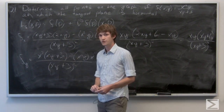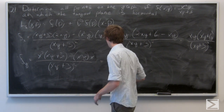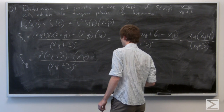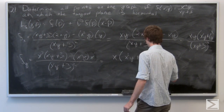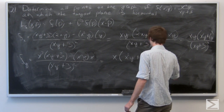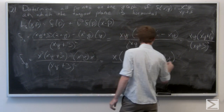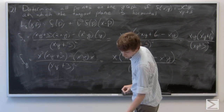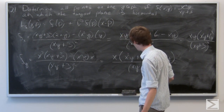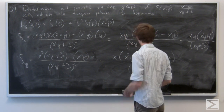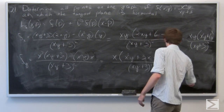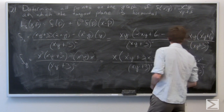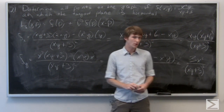The partial derivative of f with respect to y simplifies to 3x squared over the quantity xy plus 3 squared.